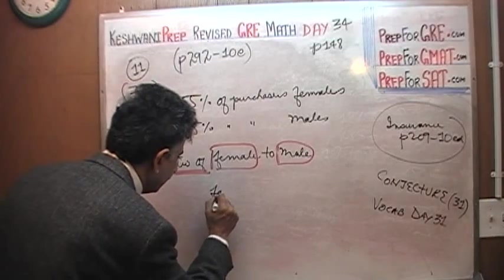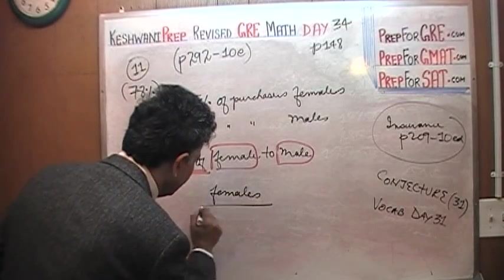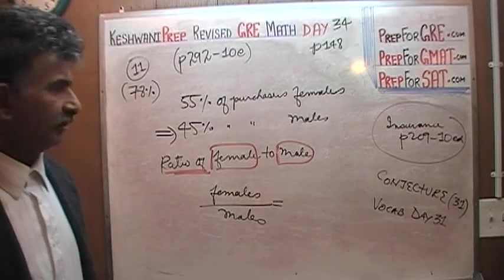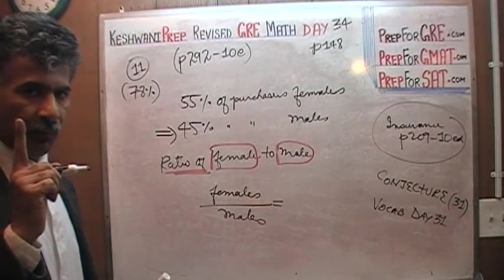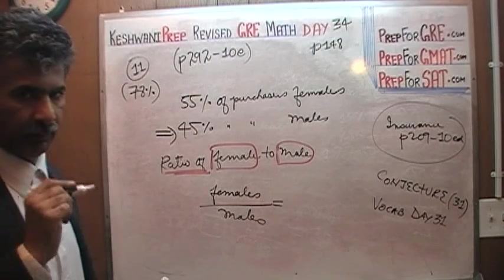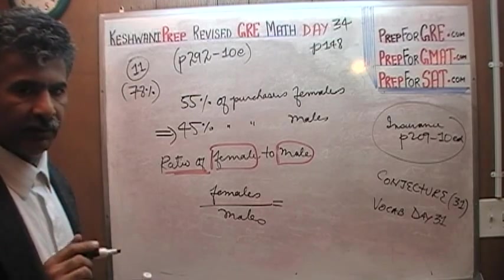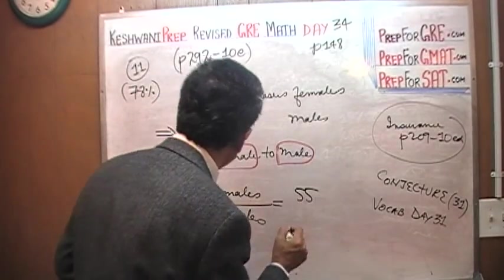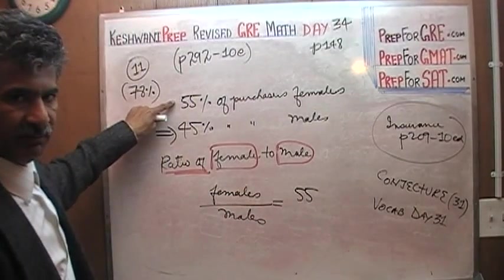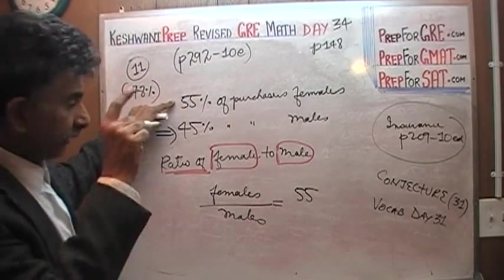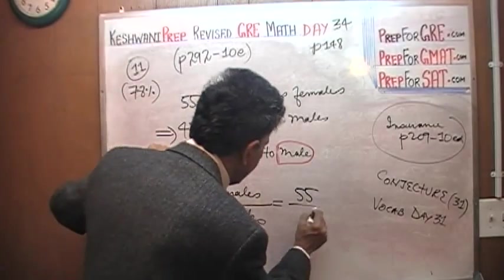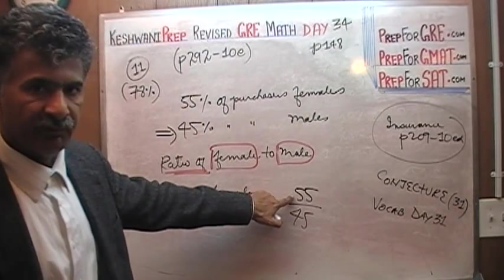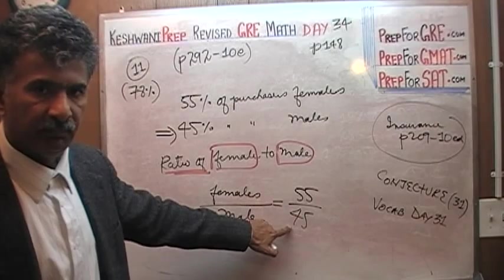So females will go on the top, males will go on the bottom. And what it tells us is that the ratio is such that for every 55 females out of a group of 100, 45 are males. That is the ratio. That's our ratio, because 55% of the purchasers were female, therefore 45% must be males.